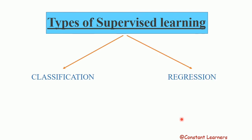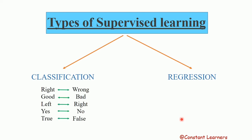In classification, there are two or more classes — like right or wrong, good or bad, left or right, yes or no, true or false. The output is in the form of two choices. When we can classify the data into two parts, we say it is the classification type of supervised learning.